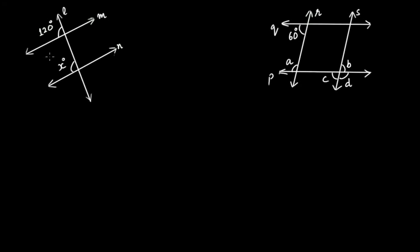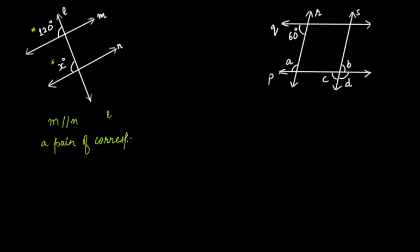In this case, M is parallel to N and L is the transversal line. Angle 120 degrees and angle X are a pair of corresponding angles. We know that in the case of a transversal to parallel lines, corresponding angles are always equal. Therefore, X will be equal to 120 degrees.